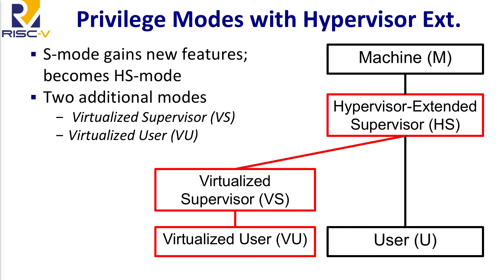We then add two more privileged modes: virtualized supervisor mode, which is where guest OSes run, and underneath that virtualized user mode, where applications running on top of a virtualized guest operating system run. The distinction between virtualized user mode and regular user mode is pretty weak — it would be a virtualization hole if application code could tell which one it's in. We call these out as distinct modes just to minimize confusion.